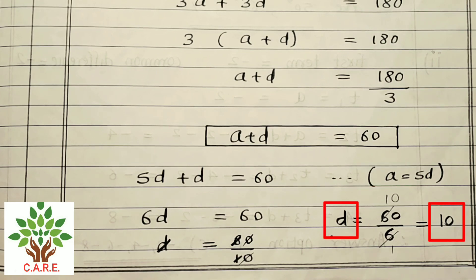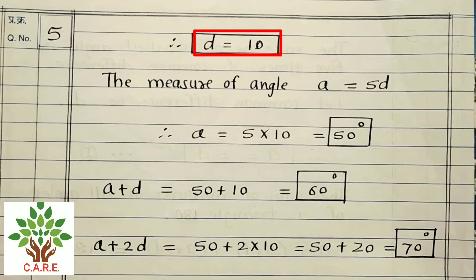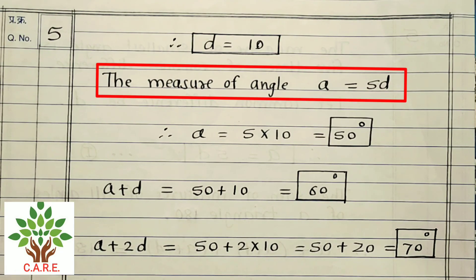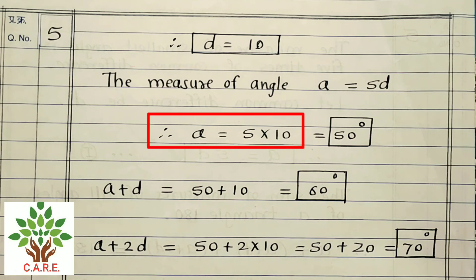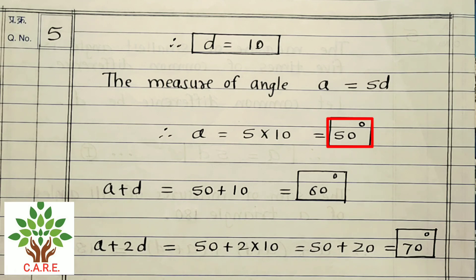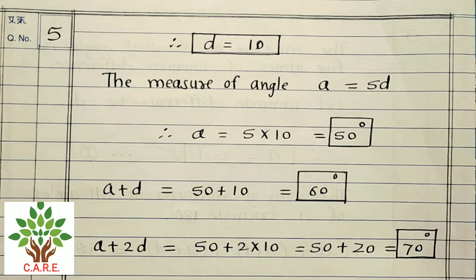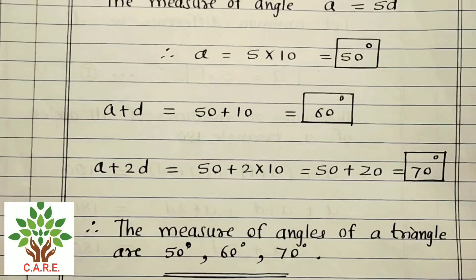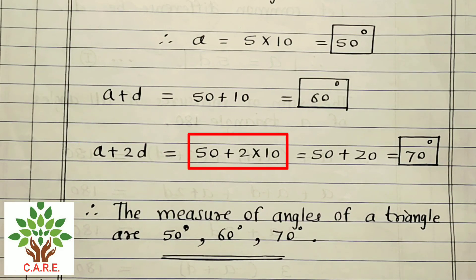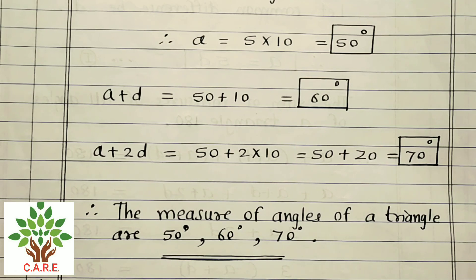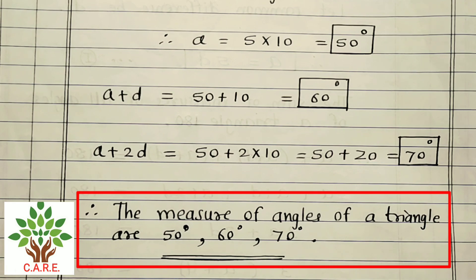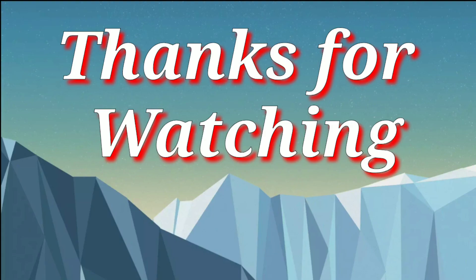Therefore d = 10. Angle a = 5d = 5 × 10 = 50°. Angle a+d = 50 + 10 = 60°. Angle a+2d = 50 + 20 = 70°. Therefore the measures of all angles of the triangle are 50°, 60°, and 70°. Thanks for watching.